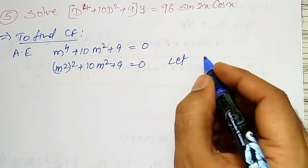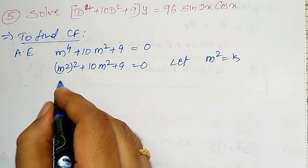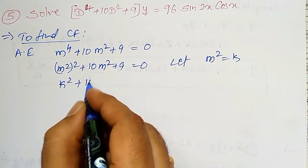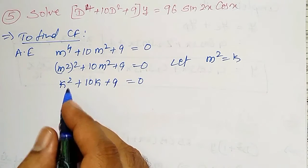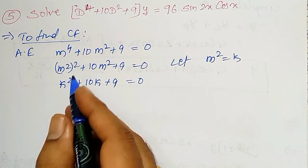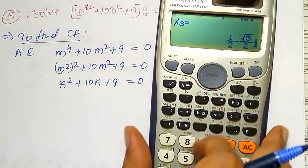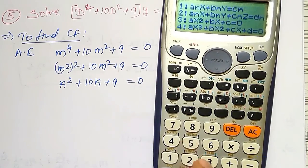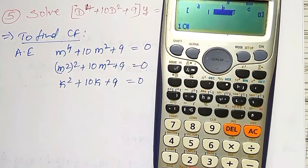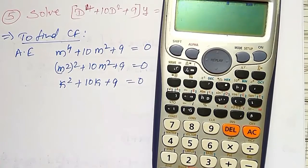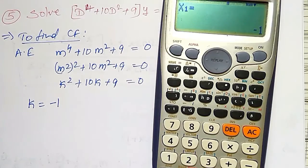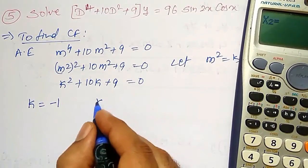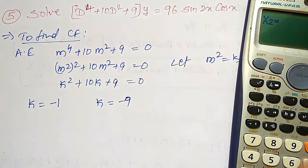For our convenience, let m squared equal to k. Therefore it becomes k squared plus 10k plus 9 equal to 0. Using the quadratic formula — going to equation mode, option number 5, with coefficients 1, 10 and 9 — therefore k is equal to minus 1 and k equal to minus 9.